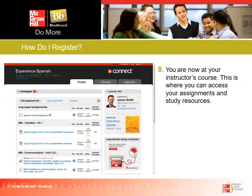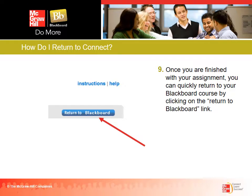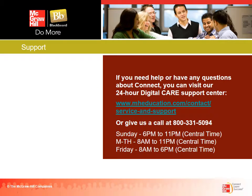You are now at your instructor's course, where you can access your assignments and study resources. Once you are finished with an assignment, you can quickly return to your Blackboard course by clicking the 'Return to Blackboard' link. That's your registration — that's as easy as it is. You'll just click on your assignments in Blackboard and it will automatically take you there. If you took the free trial, they'll remind you of your expiration date approaching, so please make sure you get that permanent access.